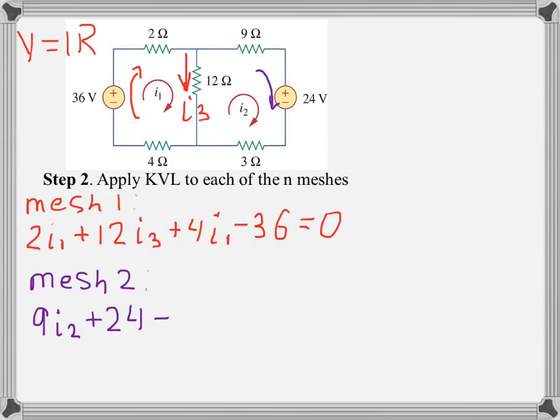3 ohms is also positive, plus 3I2. And now we're going to the 12 ohm resistor. Because we decided that current I3 is going downwards, which is opposite to I2, we assign this voltage as negative. So we put minus 12I3. And we have four elements in the loop, four components in the equation, so everything equals zero.